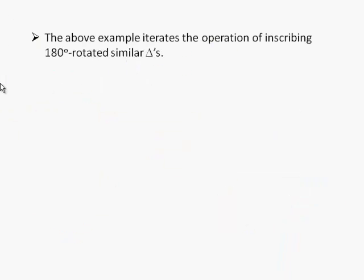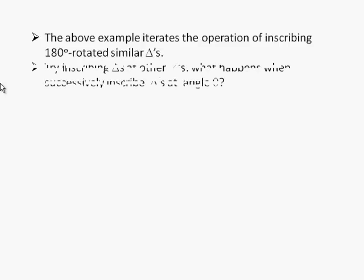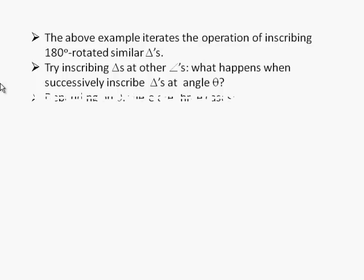So as I said, we've rotated similar triangles 180 degrees. This suggests a generalization. What if we inscribed triangles at another angle? What happens when we successively inscribe triangles at an angle theta? Where theta could be any angle, not just 180 degrees.